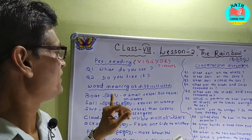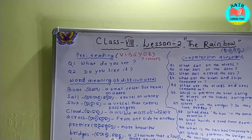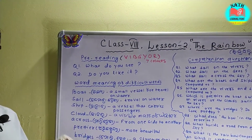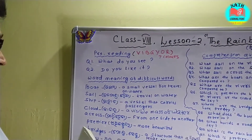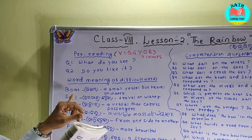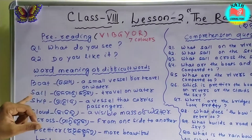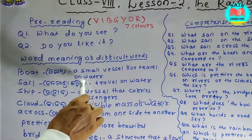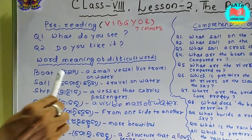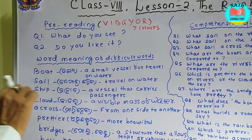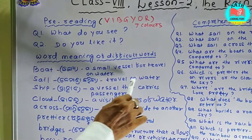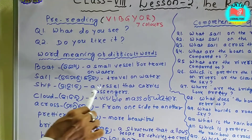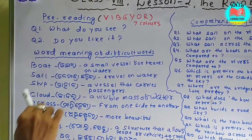Now look at some difficult words. Write them down in your notebook and listen carefully to understand. Boat means a small vessel for travel on water. Sail means to travel on water. Ship means a vessel that carries passengers.